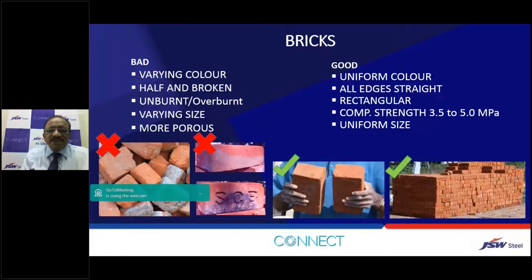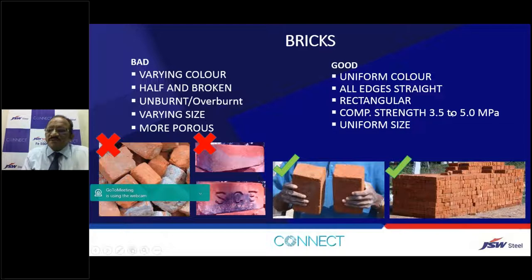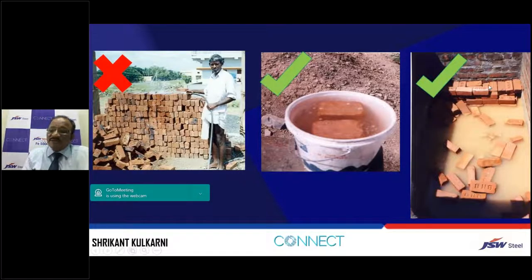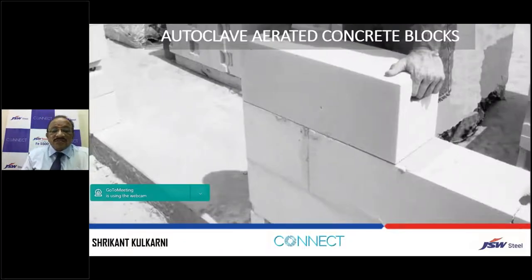Good bricks should have uniform color, straight edges, rectangular shape, compressive strength between 2.5 to 5 MPa, and uniform size. Bad bricks show varying color, are under-burnt or over-burnt, have size variation, and are porous. Some people at site make a tank to fully soak bricks in water before use; if that is not possible, bricks can be wetted with a water jet — both are acceptable practices.